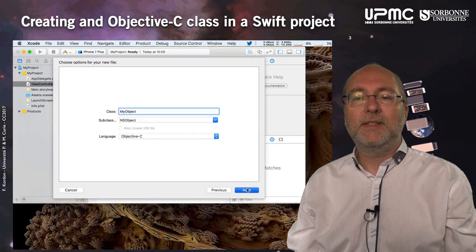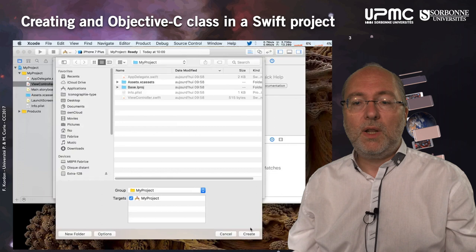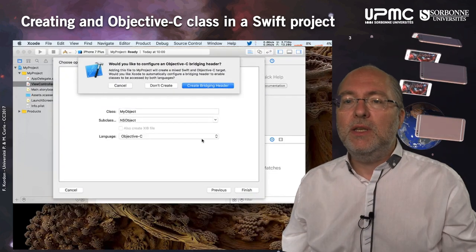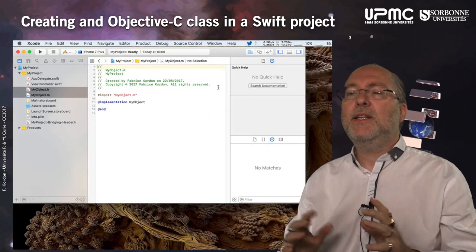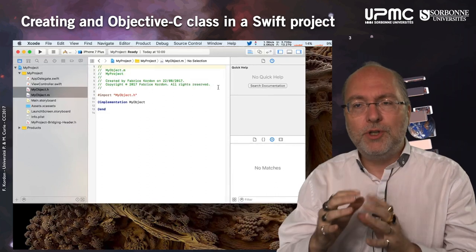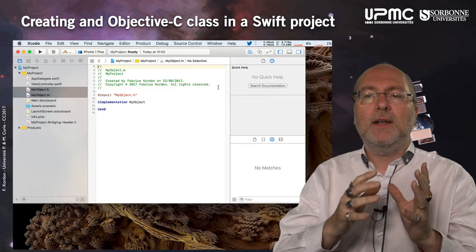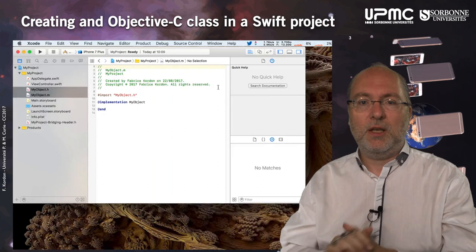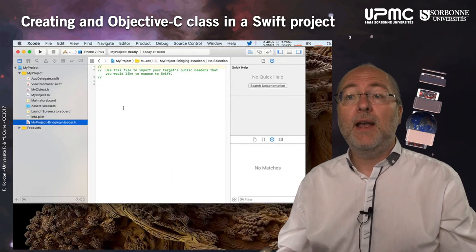And I type my object, and I just do next. And here I create it, and it proposes to create the bridge header, so I say yes. Each time you create in a project of a given language, Swift or Objective-C, a file of the other language, it proposes you to do that.